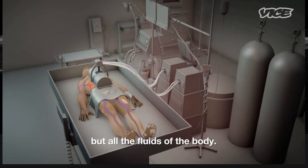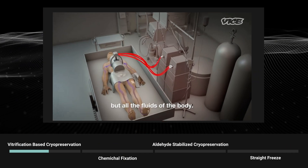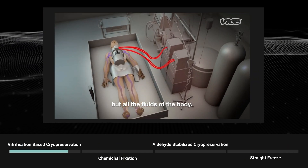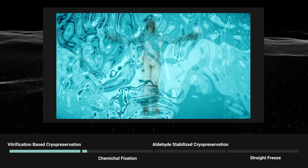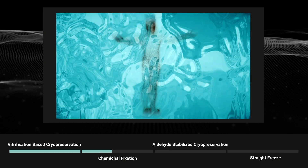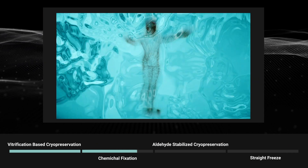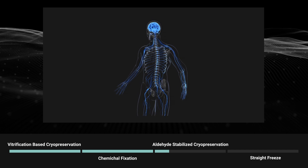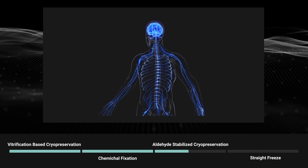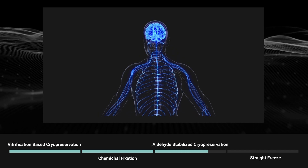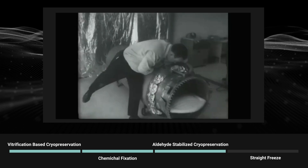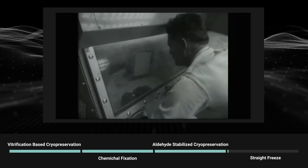The main ones are vitrification-based cryopreservation, chemical fixation without any cryo component, and ASC — aldehyde-stabilized cryopreservation.